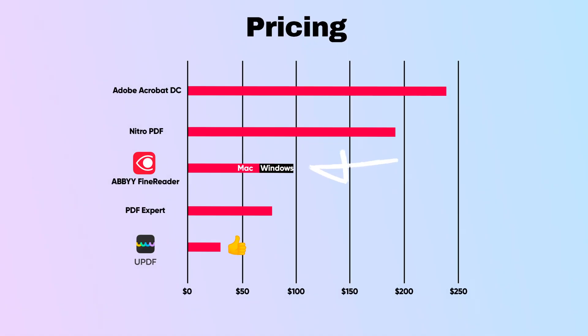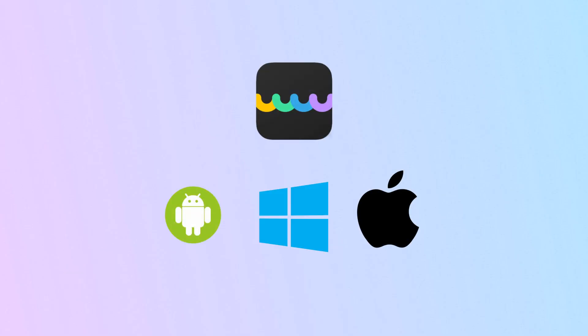When it comes to pricing, ABBYY FineReader PDF is available for Windows at $99 per year, and for Mac at $69 per year. On the other hand, UPDF offers more flexible options for various platforms, including Windows, Mac, iOS, and Android, at half the price of ABBYY for Windows. You can use it on four platforms whilst only paying once. If you prefer a lifetime deal, UPDF has you covered for only three quarters the price of ABBYY for Windows.